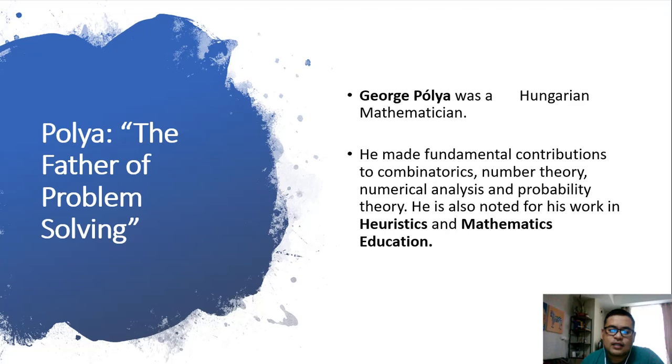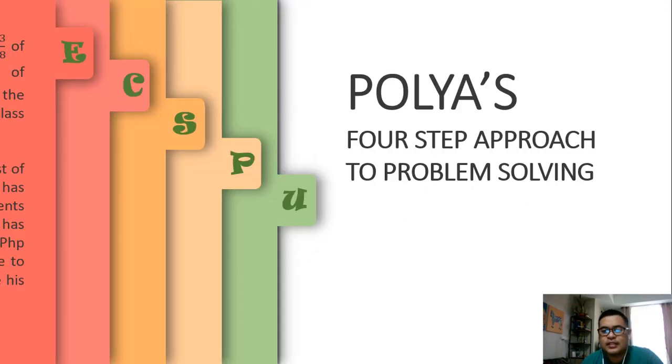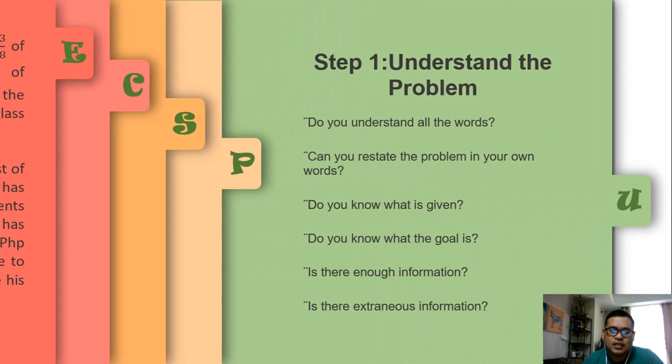So let us review the four-step approach to problem-solving. First, this is very elementary, is understand the problem or step one. You have to understand the problem. What are you going to do in this particular step? You're going to read the problem, not once, but twice, or many times, until you understand all the words.